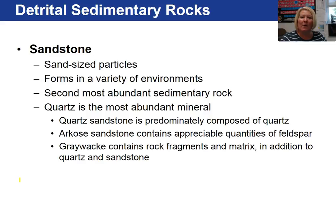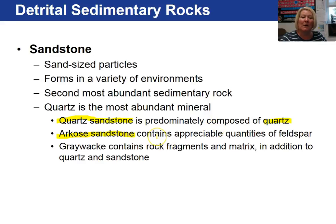If the detrital sedimentary rock is made up of sand-sized particles, we call it a sandstone. Sandstones form in a variety of environments and are the second most abundant sedimentary rock. The most common mineral in a sandstone is quartz. A quartz sandstone is primarily composed of quartz. An arkose sandstone has 25% or more potassium feldspar and is often pinkish in color. A graywacke sandstone contains rock fragments and a matrix of mud — primarily clay and silt — along with quartz.